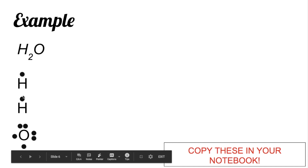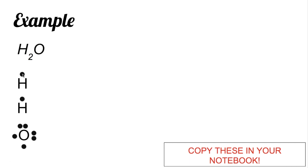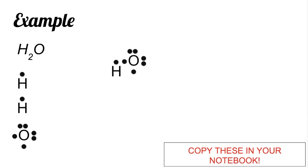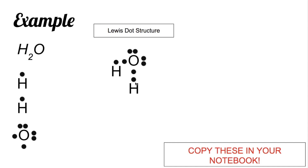Each hydrogen atom has one valence electron, so that electron can be shared with oxygen. The other hydrogen electron can also be shared with oxygen on the other side. Looking at the Lewis dot structure of the compound, your hydrogen's electron is shared with oxygen, and another hydrogen electron is also shared with oxygen. If you count the electrons for oxygen now, there should be 1, 2, 3, 4, 5, 6, 7, 8.